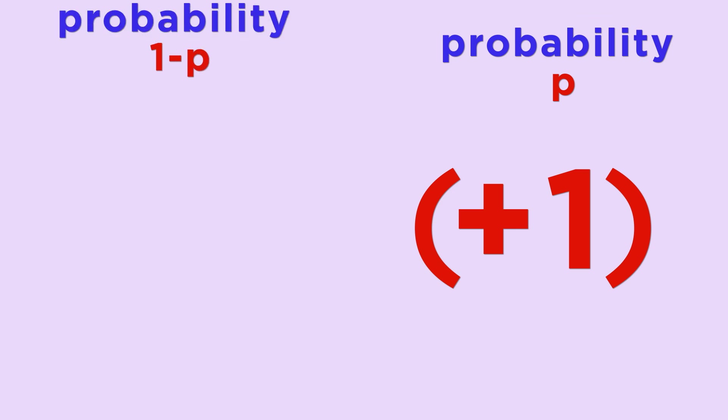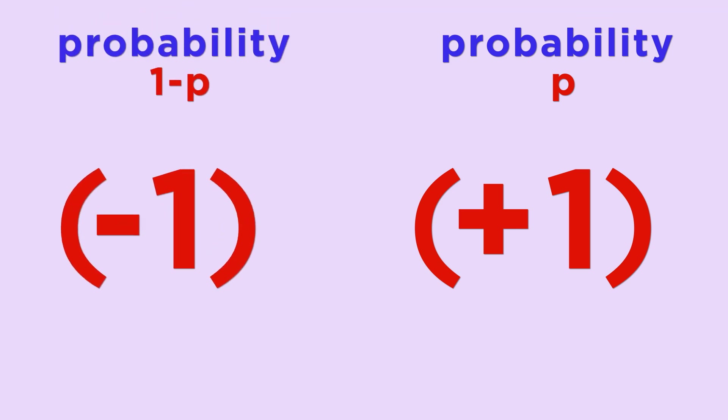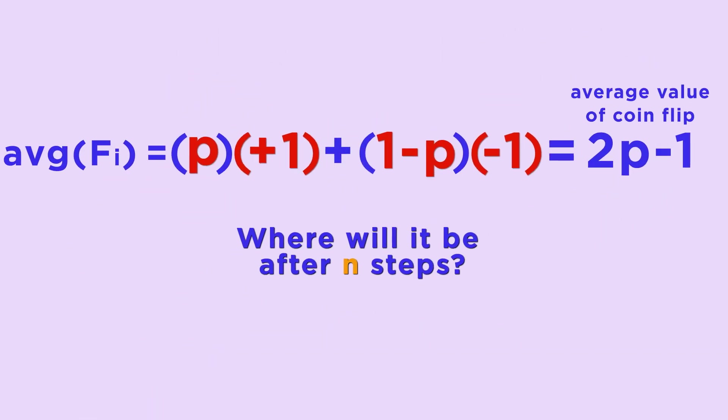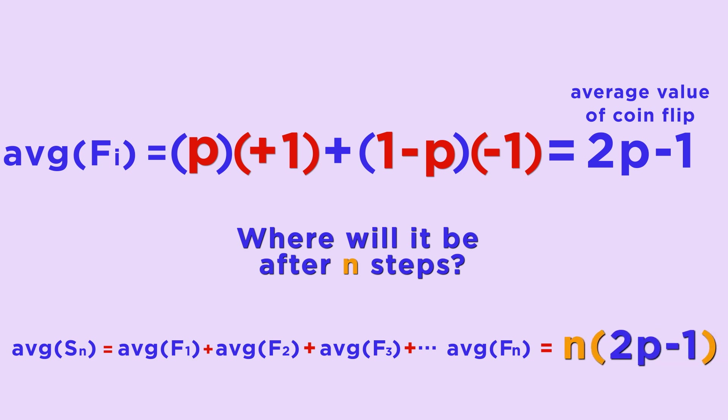Let's look at a similar computation as before to find out the expected value of one coin flip. With probability p, the coin flip is plus 1, and with probability 1 minus p, the coin flip is minus 1. So the average value of the coin flips will be 2p minus 1. Where will it be after n steps? Let's compute the expected value. Again, it's the sum of the expected values of the n flips, so it's n times (2p minus 1).